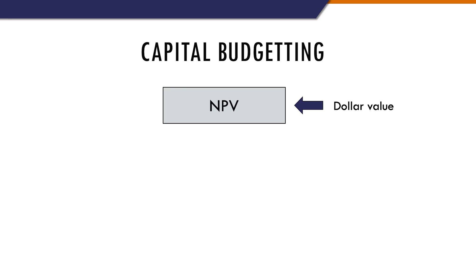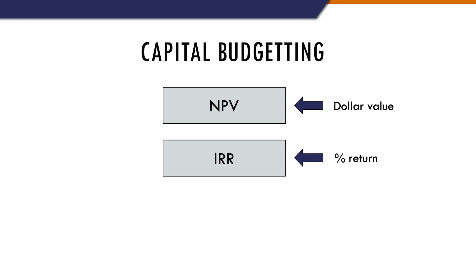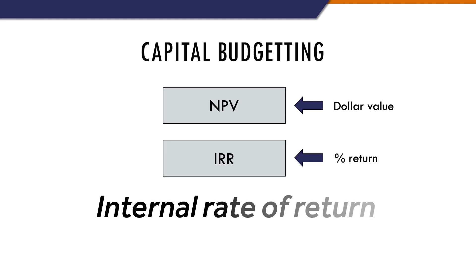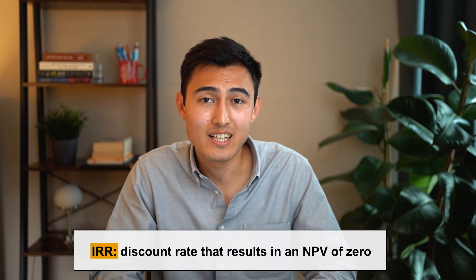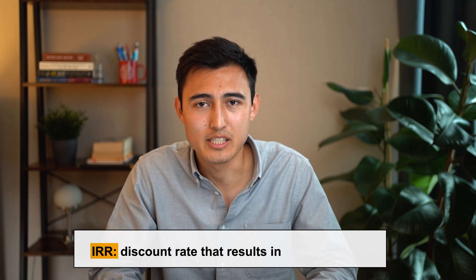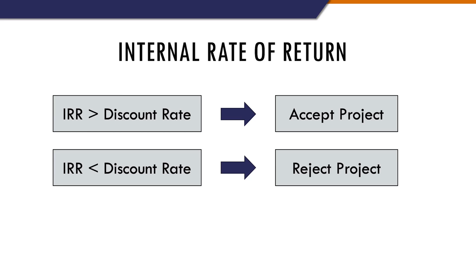Usually when you assess whether a project is worth pursuing, you don't just want the dollar amount — you also want to see the percentage return. That's when the IRR, also known as the internal rate of return, comes in handy. In technical terms, the IRR is the discount rate that results in an NPV of zero. The general rule is that if the IRR is greater than the cost of capital or the discount rate, then you accept the project.